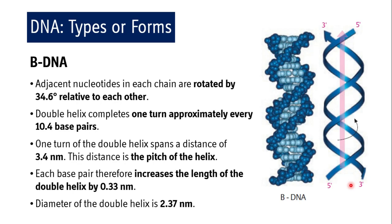The secondary structure of DNA can be affected by external factors, giving rise to three major types: B-DNA, A-DNA, and Z-DNA. In B-DNA, adjacent nucleotides in each chain are rotated by 34.6° relative to each other, and the double helix completes one turn approximately every 10.4 base pairs.